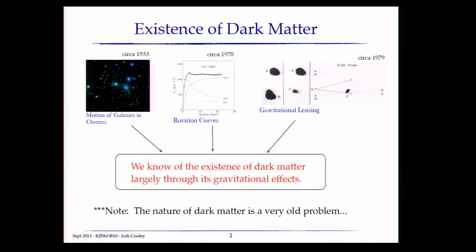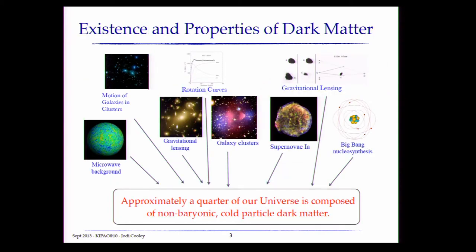Let me briefly review why we know, or why we think, that dark matter even exists at all. It all started around 1933 when Fritz Zwicky was studying the motion of the Coma galaxy cluster. Then, about 40 years later, Vera Rubin and Kent Ford discovered anomalies when looking at rotation curves of galaxies. Then, about another decade later, the first gravitational lens was seen at Kitt Peak in Hawaii. We know of the existence of dark matter largely through its gravitational effects. The nature of dark matter is a very old problem — almost 80 years old — and we still are not sure exactly what it is.